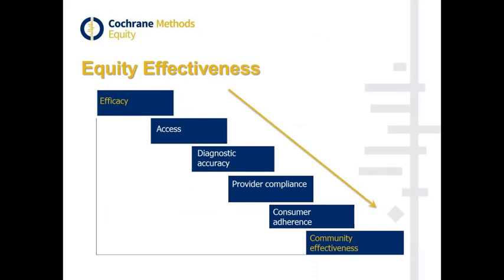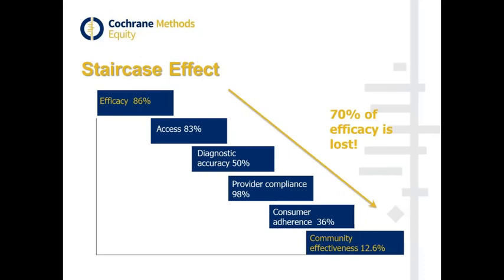When we're thinking about interventions and going to the community, we also sometimes need to think about what we call the staircase effect. Things that might have really good efficacy at the randomized control trial level might not have the same effectiveness at the community level — there are a lot of steps that could reduce the overall effectiveness. If we put some numbers in here, efficacy could be 86% for an intervention like bed nets to treat malaria, but people have to be able to access those bed nets and use them if they receive them. There are a lot of places along the chain where you could lose efficacy and end up with effectiveness that's a lot lower.